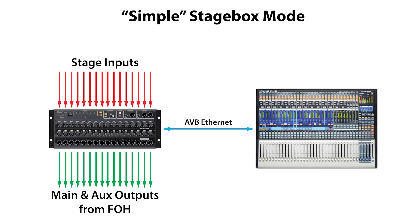There are two stage box modes supported with this system. The first is simple stage box mode. In this mode, the RM mixer acts as a simple stage box, providing inputs to the AI console mixer at front of house, and outputting the main mix and AUX mixes from the front of house mixer to the RM mixer's main and mix outputs. In this mode, the RM mixer's DSP is bypassed and it functions as a traditional digital snake.